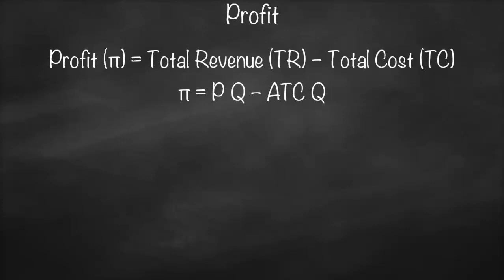So what would be our total cost? Do you remember the formula for average total cost? Average total cost is equal to total cost divided by quantity. So if we use cross multiplication, our total cost will be average total cost times quantity.